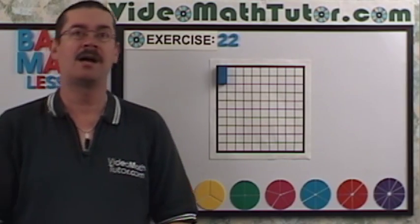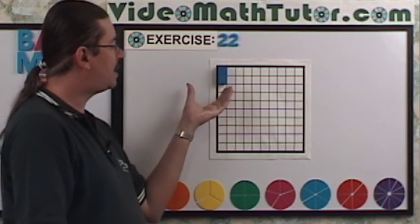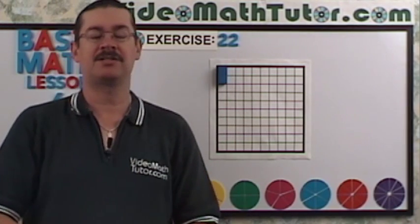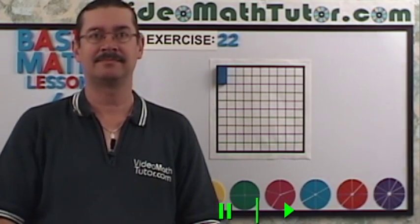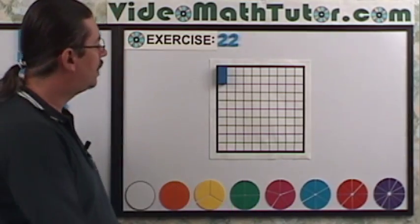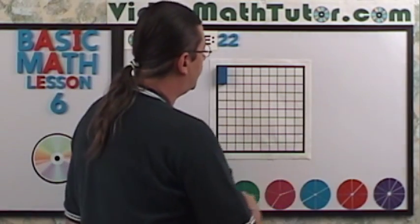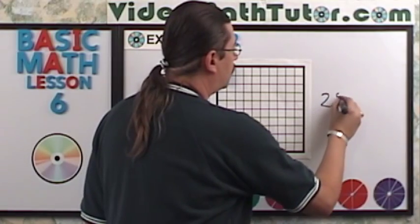For exercise 22, I want you to express this shaded area as a percentage. Well, we only have two blocks out of 100 that are shaded, so that's just 2%.